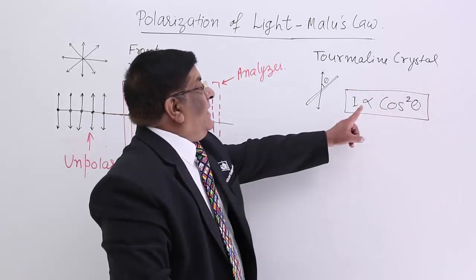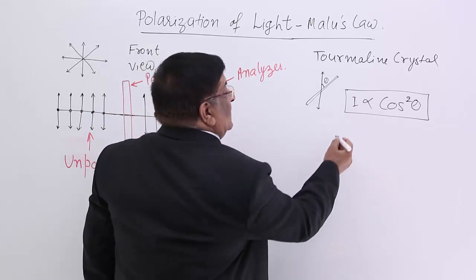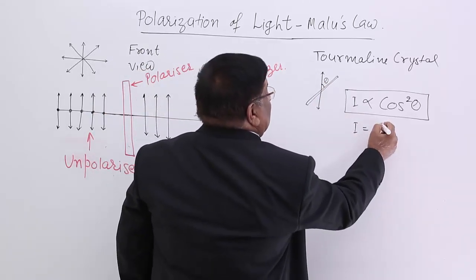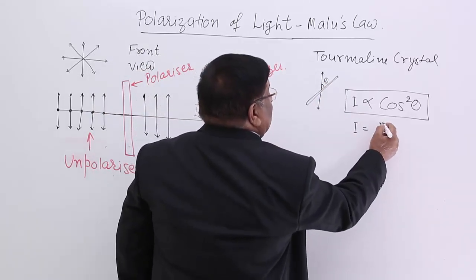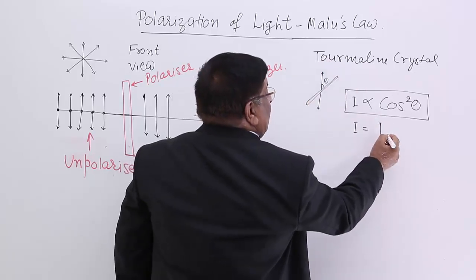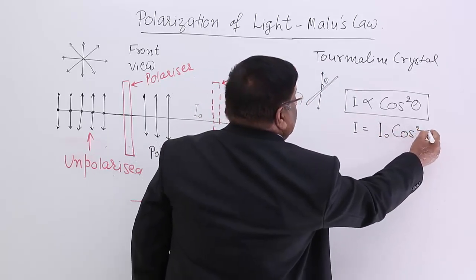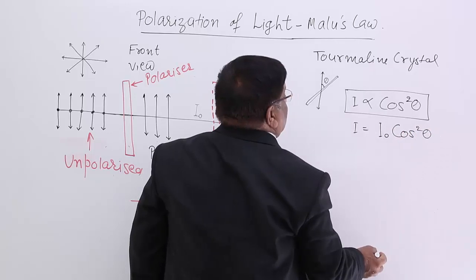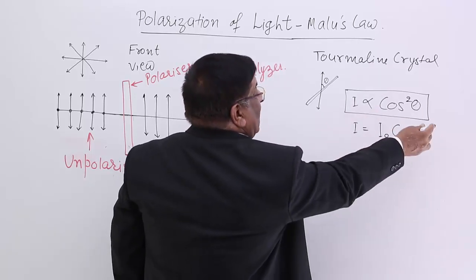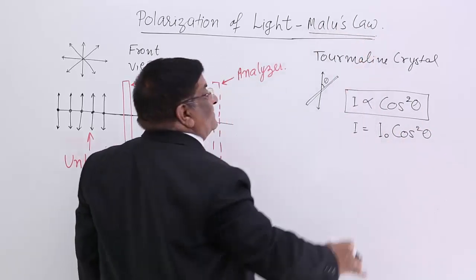If a constant is to be put here, that constant is the maximum intensity this polarized light was having. So the intensity is I₀ cos²θ. This relation is known as Malus's law.